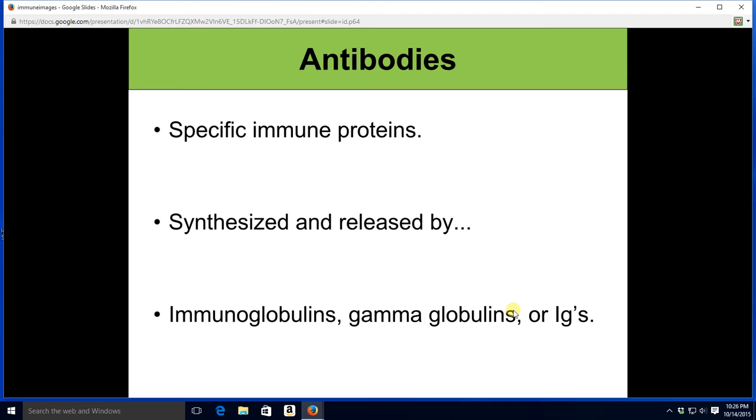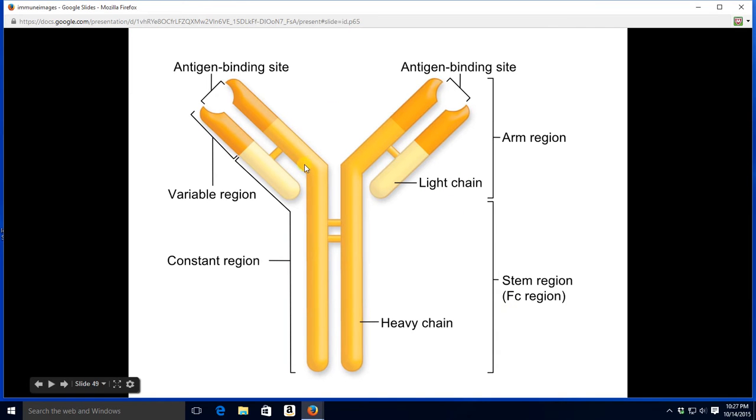Antibodies. We just finished talking about them last time. They're made by plasma cells. They help deal with extracellular pathogens. They are specific immune proteins, synthesized and released by plasma cells. Bear in mind, antibodies are sometimes called immunoglobulins, gamma globulins, or simply Igs. Here is a lovely-looking antibody. Looks like the letter Y.